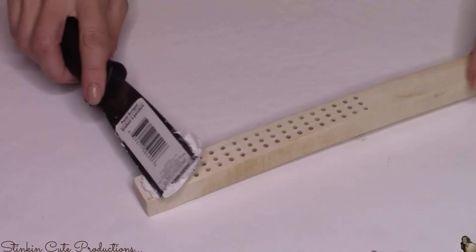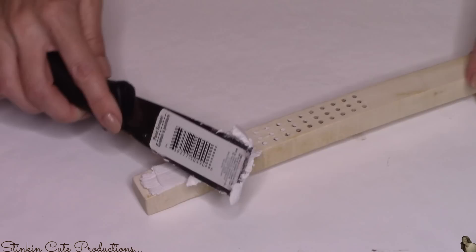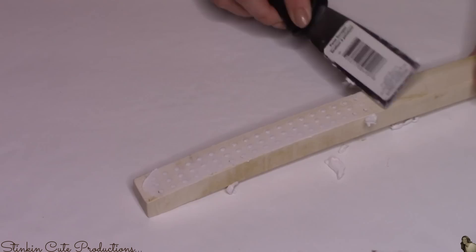Now using some lightweight spackling by Toolbench, this too you can get at the Dollar Tree and a putty knife. I picked this putty knife up from the Dollar Tree as well. I'm gonna fill in all the holes on this brush with this. Stick with me. I promise you this is worth it. This is an easy DIY.